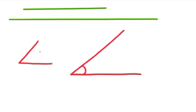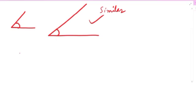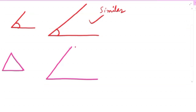However, the lengths or sizes should be in the same ratios. We can have similar lines, similar angles, and similar triangles, rectangles, and circles. We can conclude that all congruent figures are similar, but all similar figures may not be congruent.